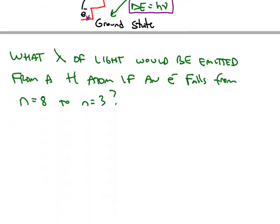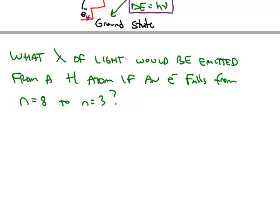So, for example, if we excite an electron in a hydrogen atom, and we bump it up to the n is equal to 8 level, what wavelength of light would be emitted if it falls from the 8th level down to the 3rd level? So we can use this formula for frequency.